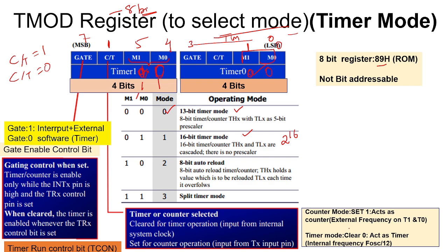The internal clock pulse is your oscillator frequency divided by 12. If C bar T is 1, it acts as a counter driven by an external signal on pin T0 or T1. It is very important to understand this distinction.